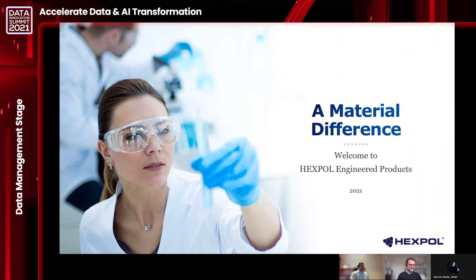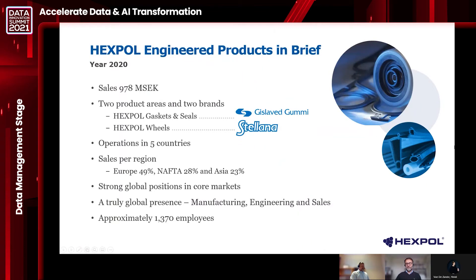My name is Andreas Karlsson and I work for Hexpol Engineered Products, which is one of two legs within the Hexpol Group. We manufacture wheels and tires, rubber gaskets and seals, with operations in five different countries. All sites within Hexpol Engineered Products are using the same ERP system, IFS, with around 300 different licensed users which me and my team supports. The rest of Hexpol uses different kinds of ERPs, and in total we are around four and a half thousand employees.